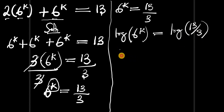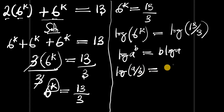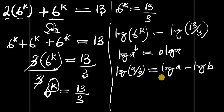Now, if you have log of a to the power b, this equals b times log of a. And if you have log of a divided by b, this equals log of a minus log of b. We are going to make use of these two identities.